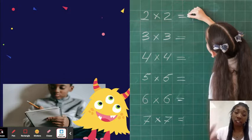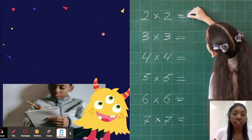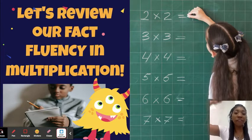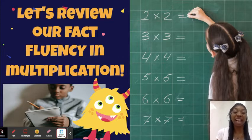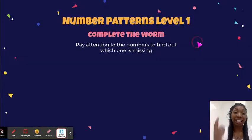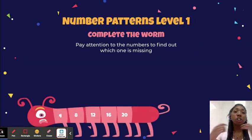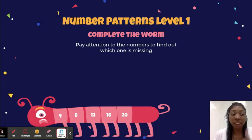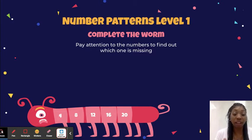Before we dive into our lesson for today, we always practice our fact fluency in multiplication, because when we are fluent in our math facts it helps us become better mathematicians. So let's pay close attention to the worms and find the missing number. Remember, this will help us with our skip counting, because skip counting is a great way to help us with our multiplication facts.